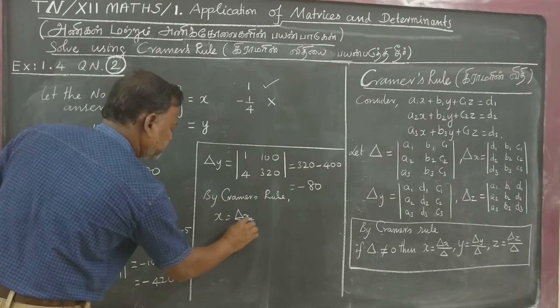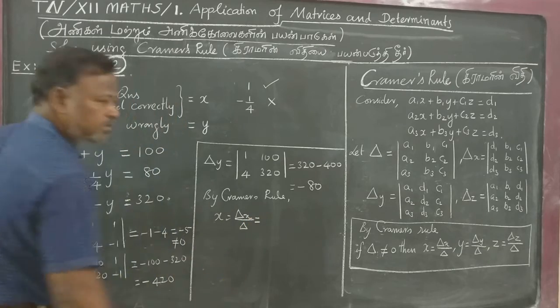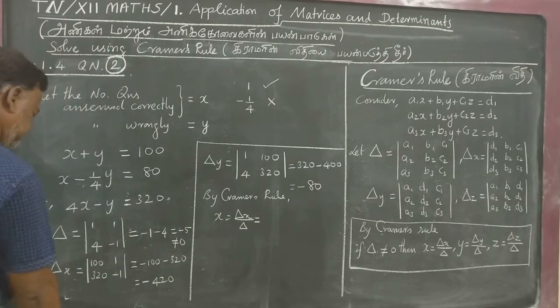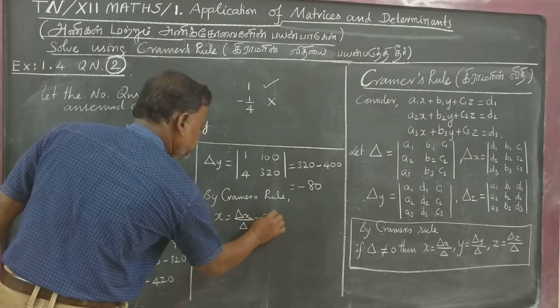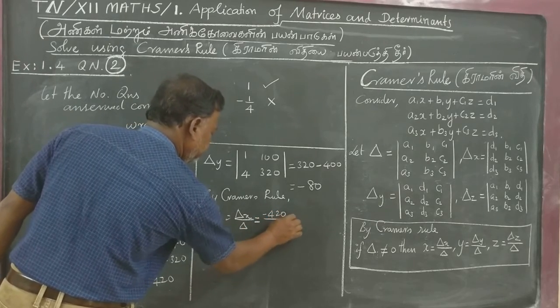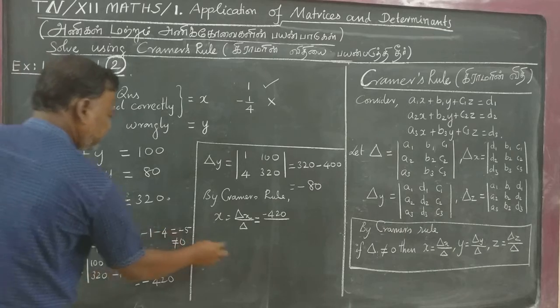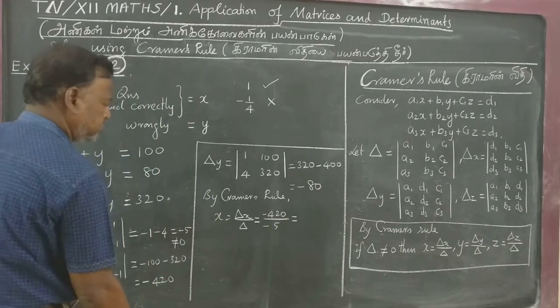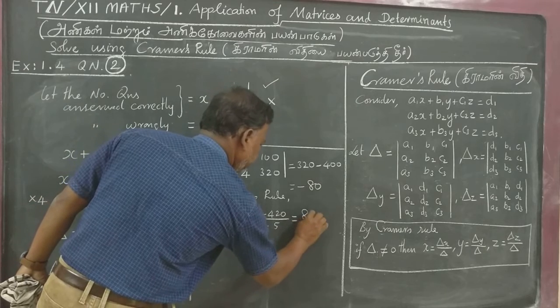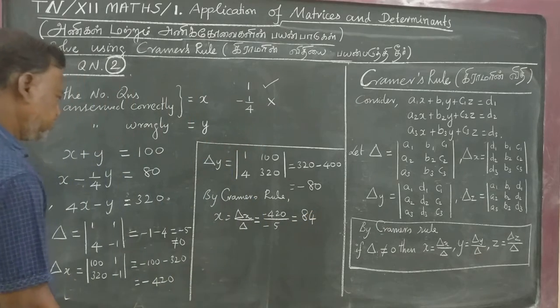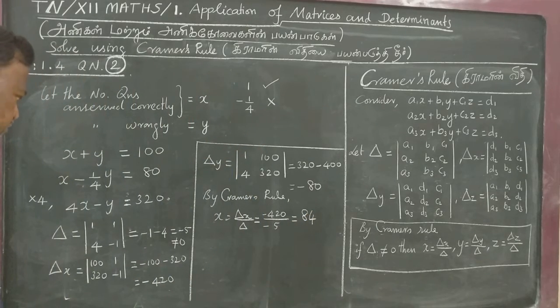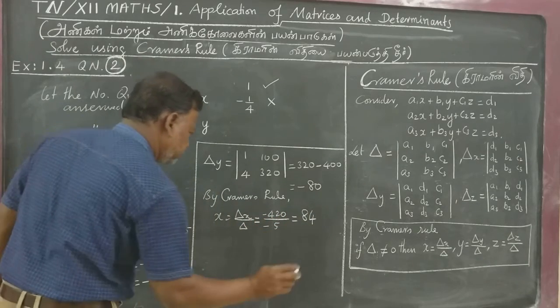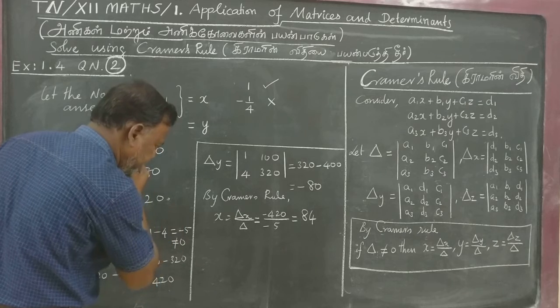By Cramer's Rule, x equals delta x by delta. That is minus 400 by minus 5, so 80. 5 into 40, 8 into 5.